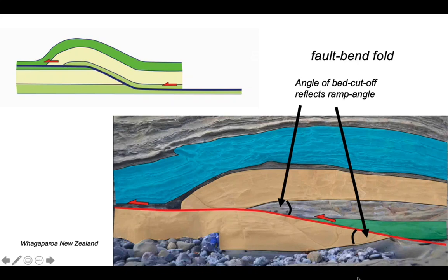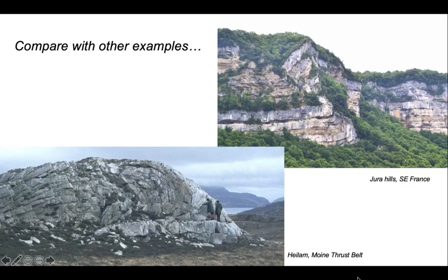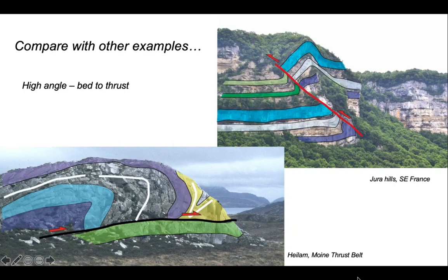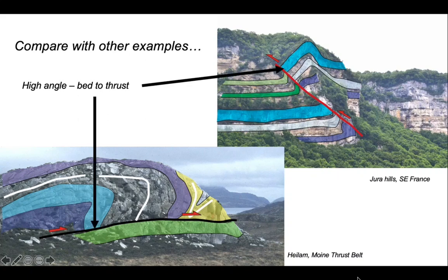And because thrusts cut up stratigraphic dips of about 30 degrees or less, it means that that hanging wall angle has to be about 30 degrees or less coming down bedding against the fault plane. So let's take that understanding and see how well it stands up when we compare with other examples around the world. So here are two other fold structures associated with faults, one from the Jura, one from the Moine Thrust Belt in northwest Scotland. Let's add some geological interpretation of the layering. And in both examples, the beds in the hanging wall come down against the fault plane making a high angle. In fact, in the lower example, the beds are slightly overturned. So these clearly are not explained simply by the fault bend fold model.